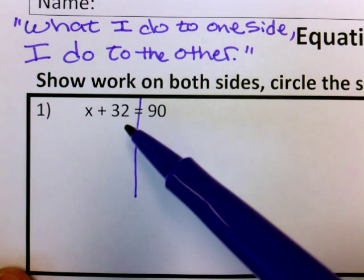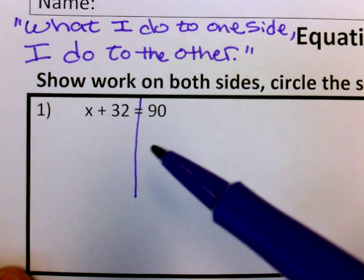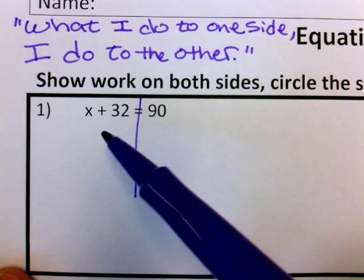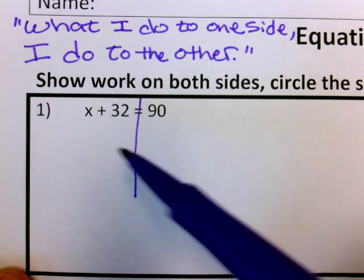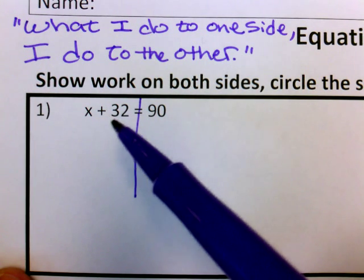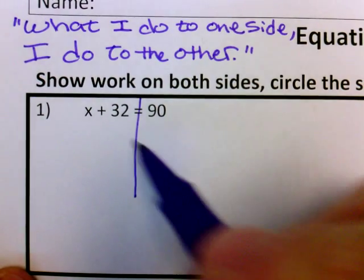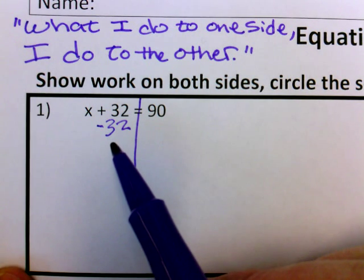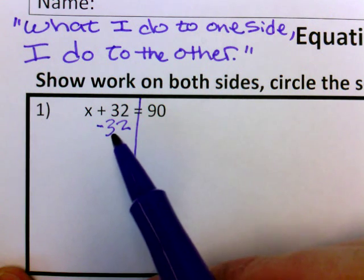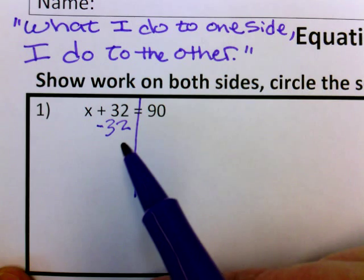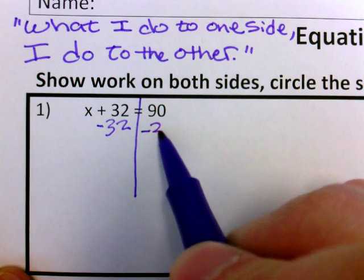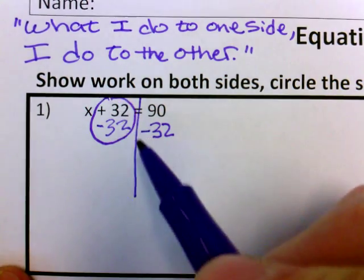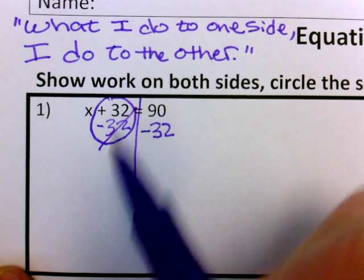Right now we have x plus 32 is equal to 90. Our ultimate goal is to isolate the variable, to get x by itself. I just want to know what x is. So what I need to do to solve this is I need to do the opposite of plus 32. The opposite of plus 32 is minus 32. I need to show my work that I am going to subtract 32 over here. That will get me just x. A positive 32 and a negative 32 — those cancel out.